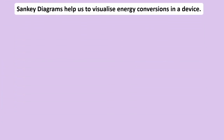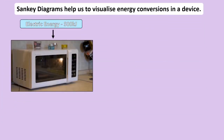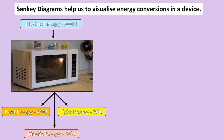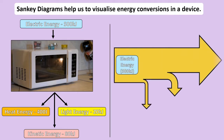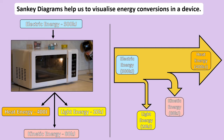In this microwave, 500 kJ of electric energy enters the device and is converted into 400 kJ of heat energy, 80 kJ of kinetic energy when the plate spins, and 20 kJ of light energy. A Sankey diagram with three arrows can be drawn to represent this conversion. Light energy is labeled on the thinnest arrow because only a small amount emerged. Heat energy is labeled on the thickest arrow as it was the predominant form emitted, leaving kinetic energy on the remaining arrow.